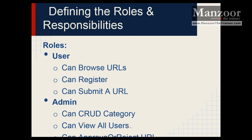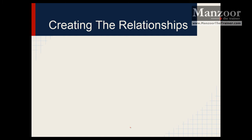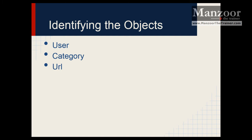So we have defined two roles: user and admin. User can perform these tasks, admin can perform these tasks — roles and responsibilities have been defined. Next, identifying the objects. If we observe carefully we can identify three objects: the first object is definitely a user, then category, and then URL. Note that admin is also a user — user means admin or normal user. So we have three objects: user, category, and URL.